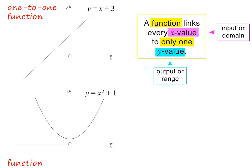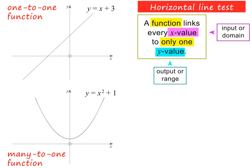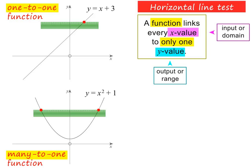The straight line is in fact a one-to-one function, and the parabola is a many-to-one function. In other words, we have two different types of functions here. To test for which type of function we have, we use what is called the horizontal line test. To do this, we can use a horizontal ruler and move it across the graph from top to bottom. If it cuts the graph only once, then the function is a one-to-one function. And if it cuts more than once, then it is a many-to-one function.